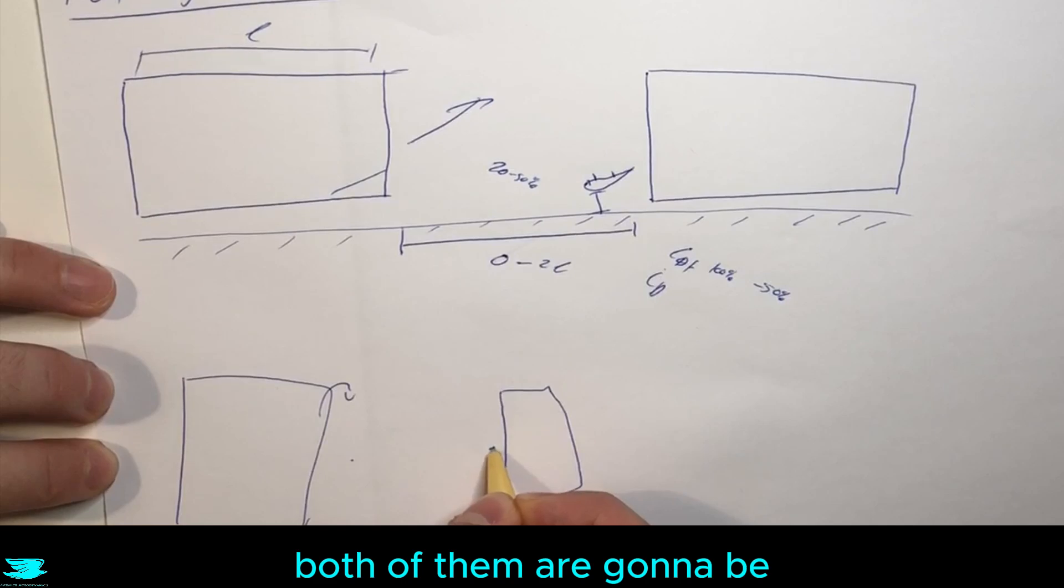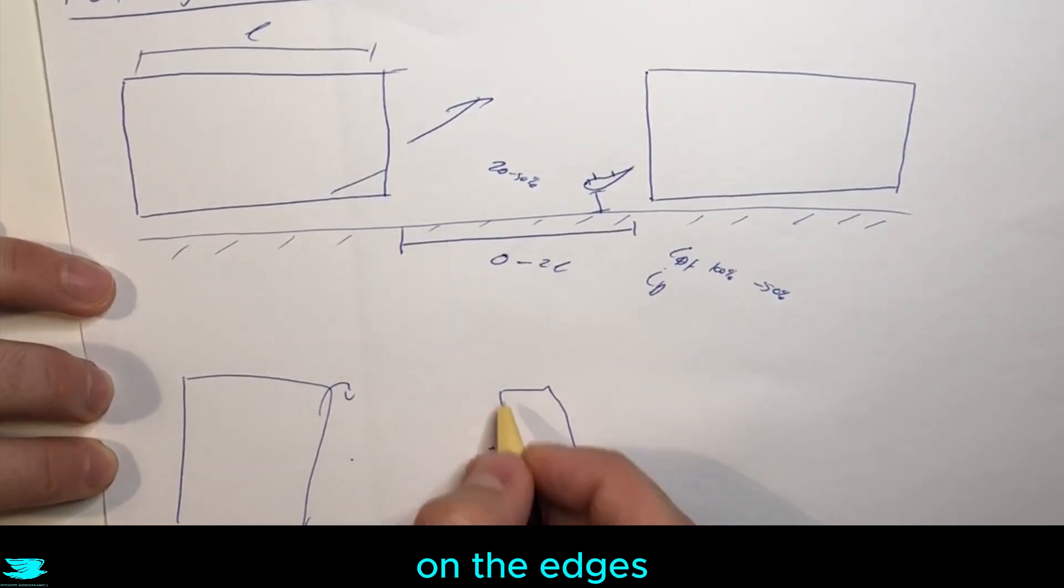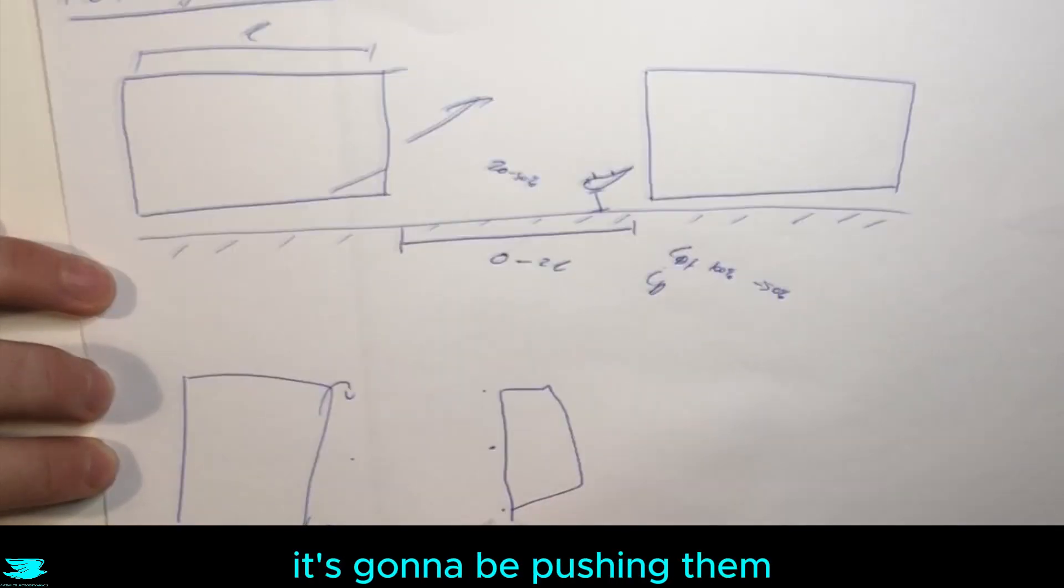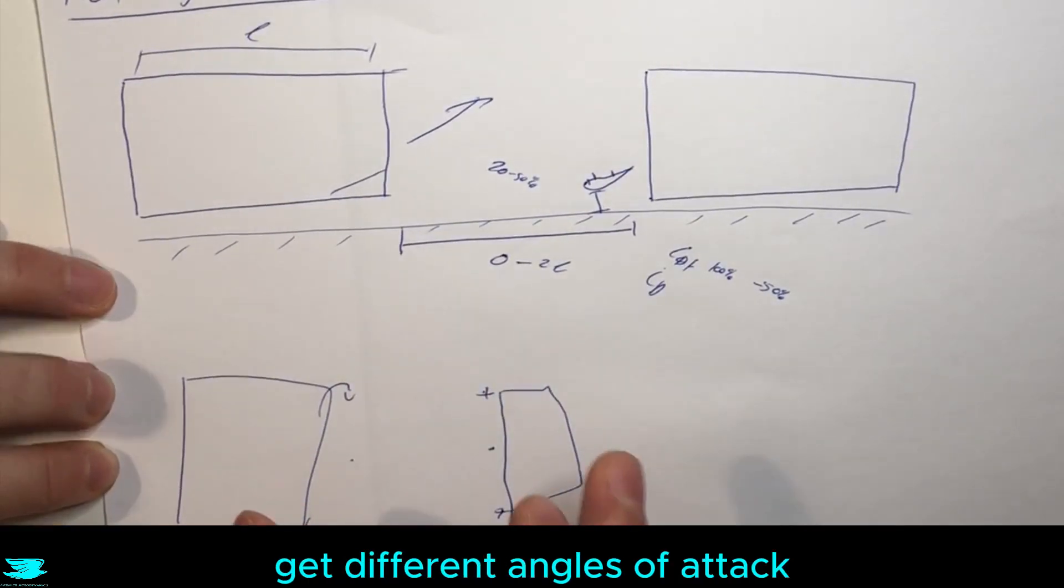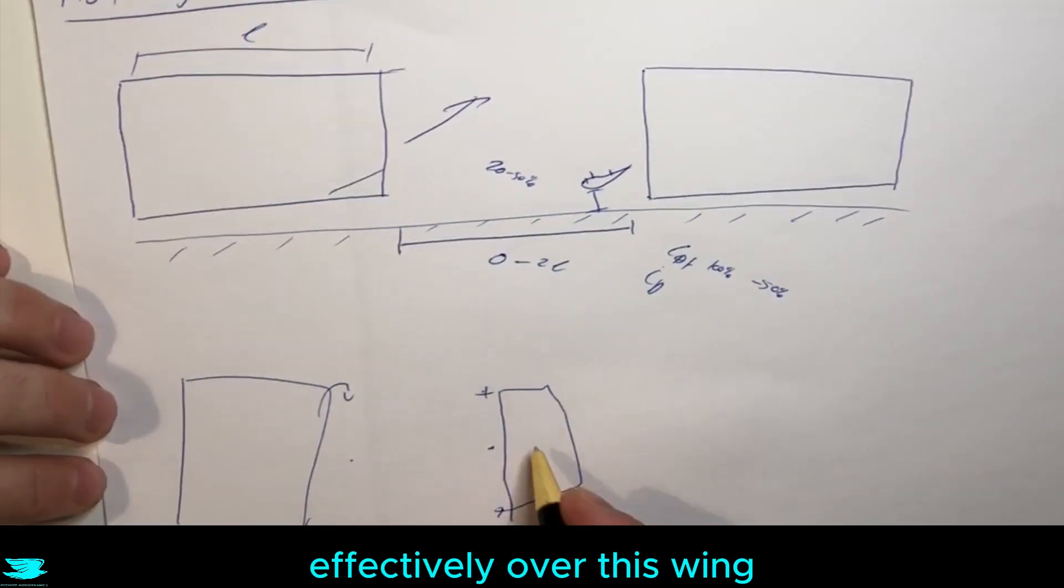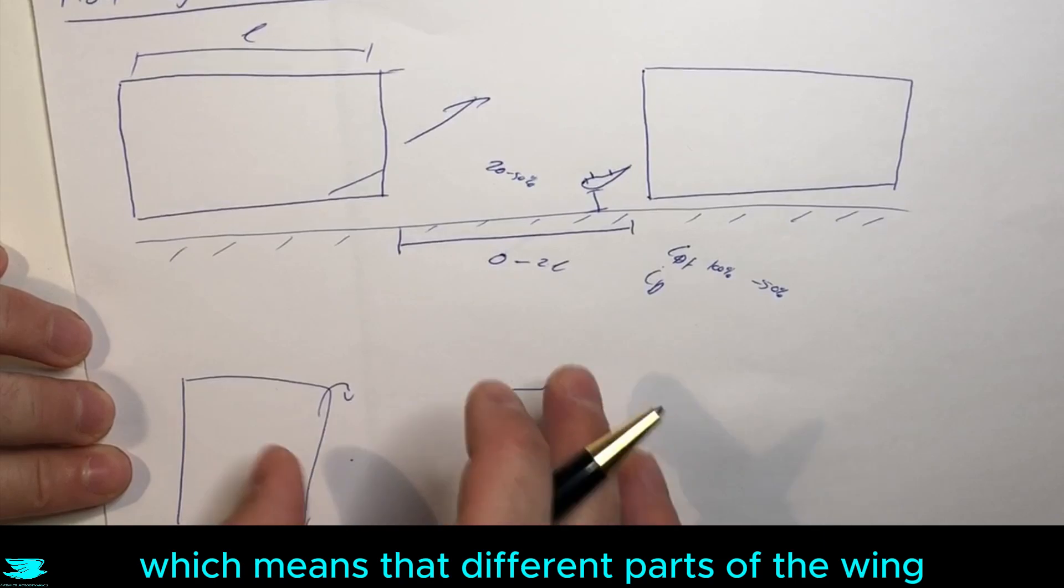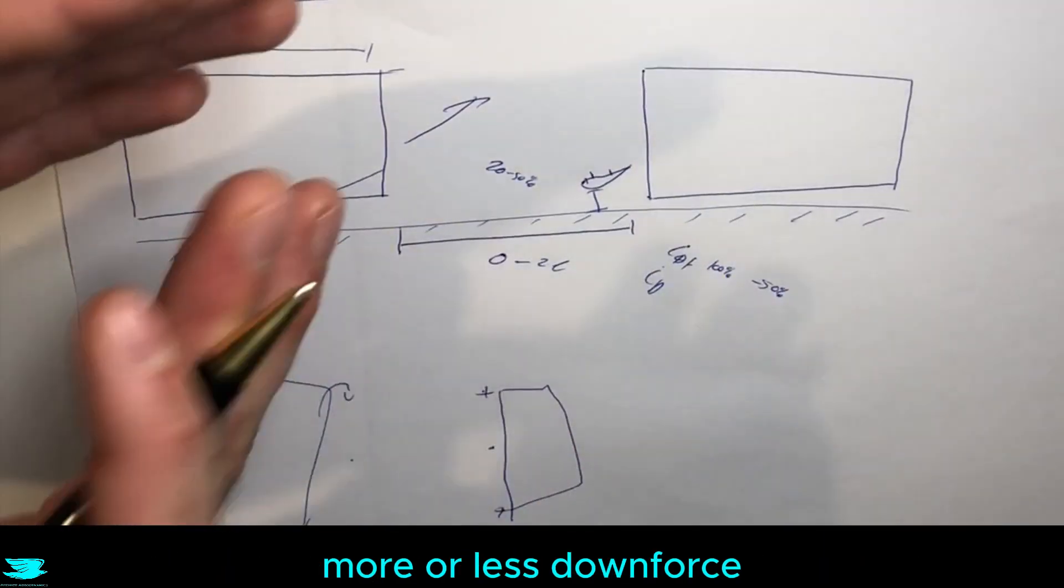In the middle here, because the vortices are kicking up, both of them, it's going to be pushing the flow higher up. On the edges it's going to be pushing them down into the page. So that means we're going to get different angles of attack effectively over this wing, which means that different parts of the wing are going to produce more or less downforce than what they usually should be producing.